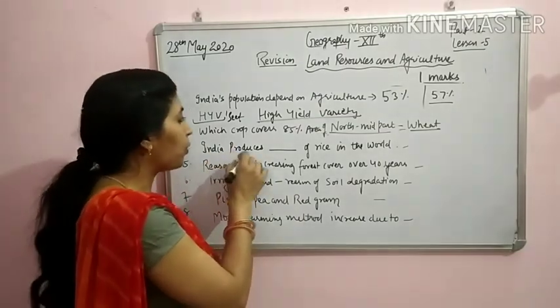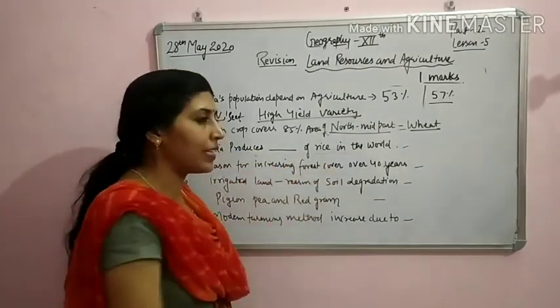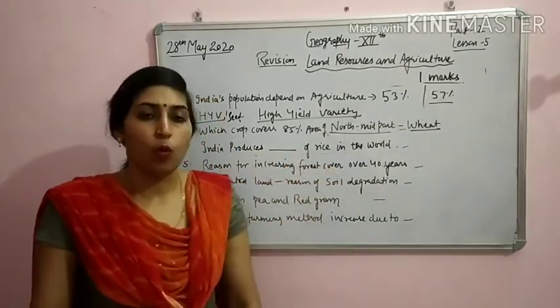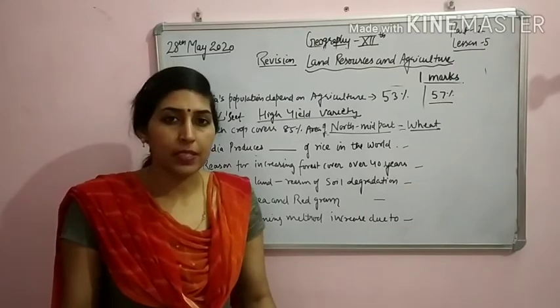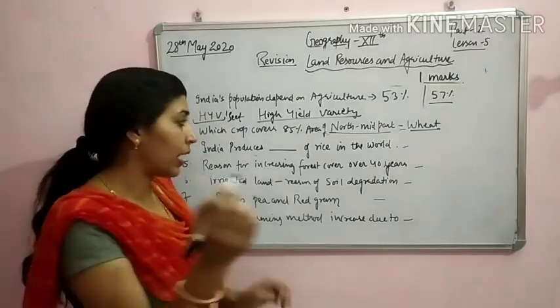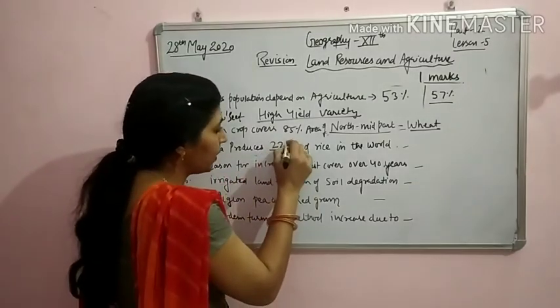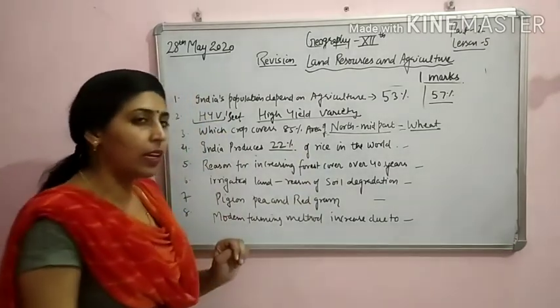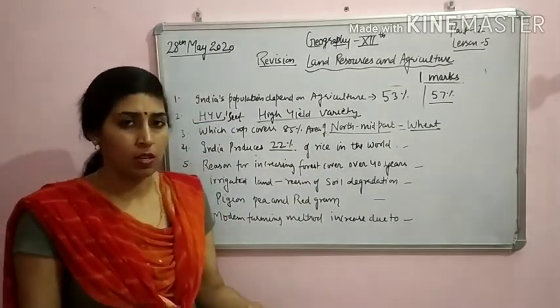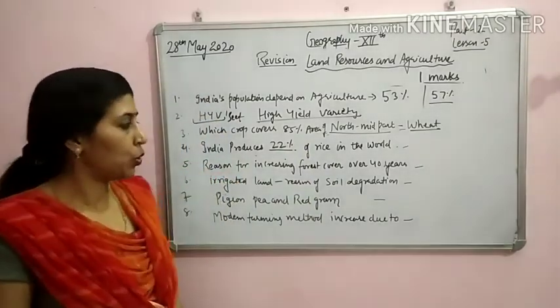India produces how much percent of rice in the world? The answer is 22%. India produces 22% of the world's rice. This percentage must be remembered as this question can be asked.